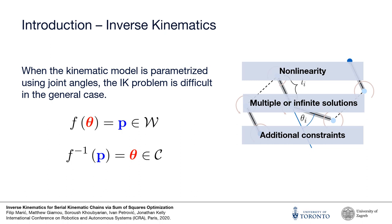Finally, including additional constraints such as joint limits or obstacles will either involve post-processing the number of analytical solutions, or in the general case adding more constraints to the numerical optimization.